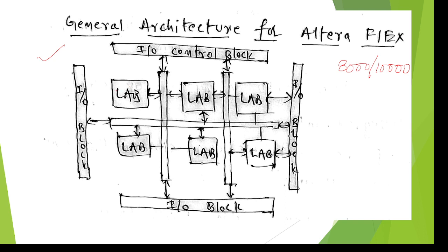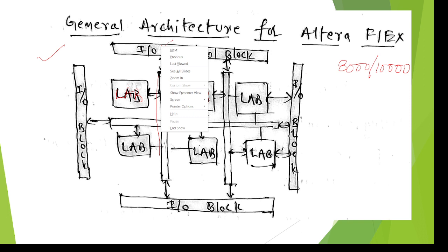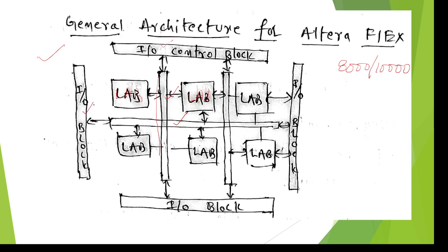Two or more Logic Array Blocks (LABs) can be seen here — this is one logic array block and this is another. These are the interconnections between them, made using metal to provide connections between devices. Input/output ports or control signals are required everywhere, so we have I/O blocks on the sides of the architecture.